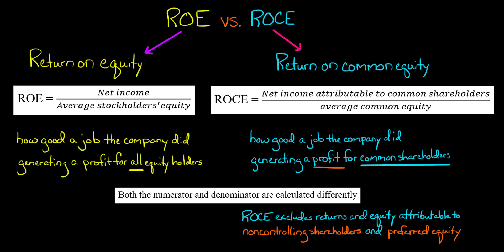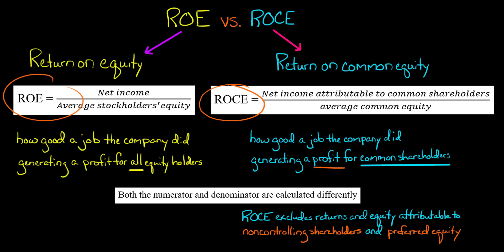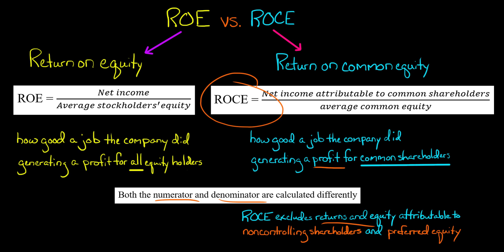And in the denominator, we're just focusing on common equity. That's the difference between return on common equity and return on equity. You'll notice that both the numerator and the denominator are calculated differently. When it comes to return on common equity, we're going to be excluding returns and equity attributable to non-controlling shareholders and to any preferred shareholders.